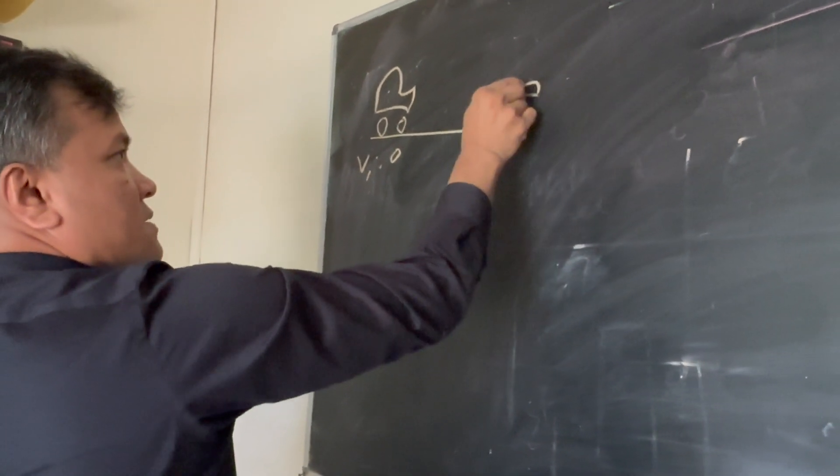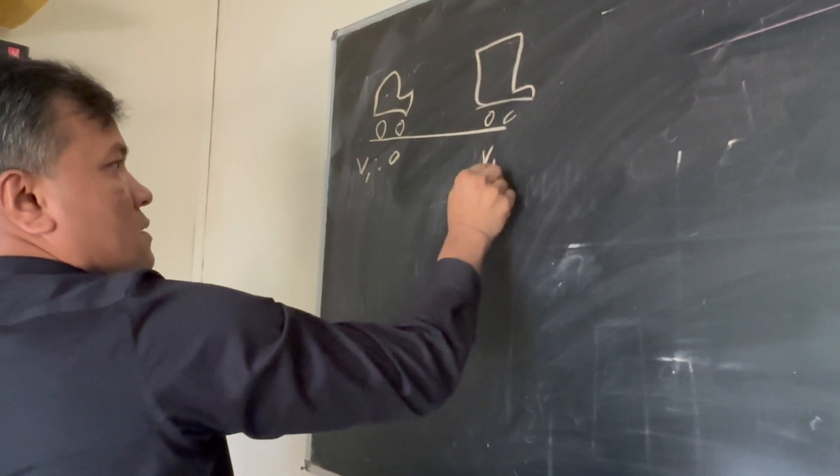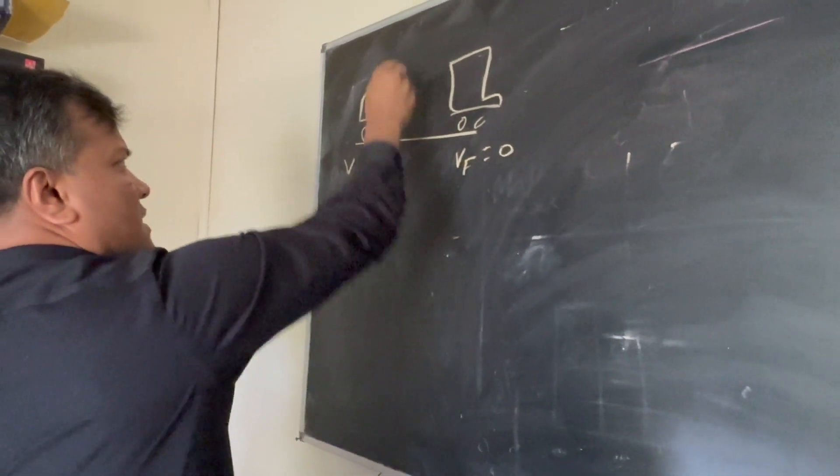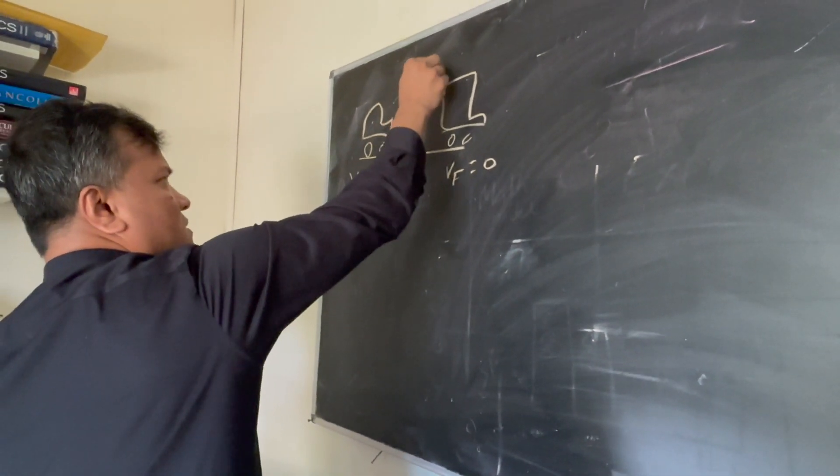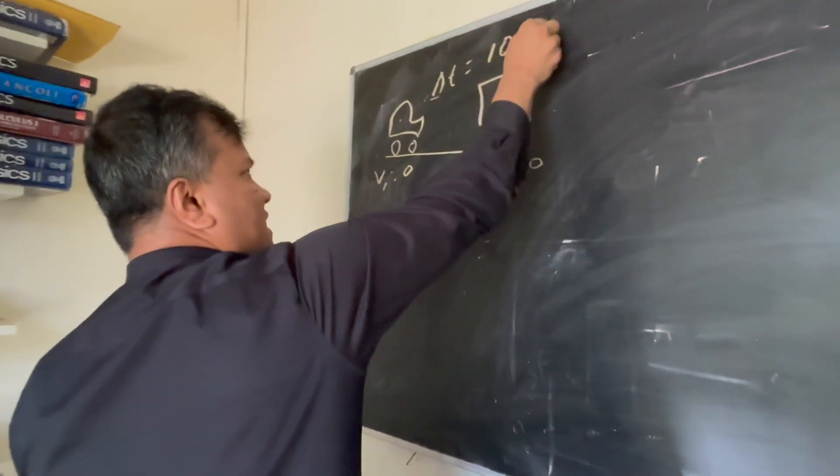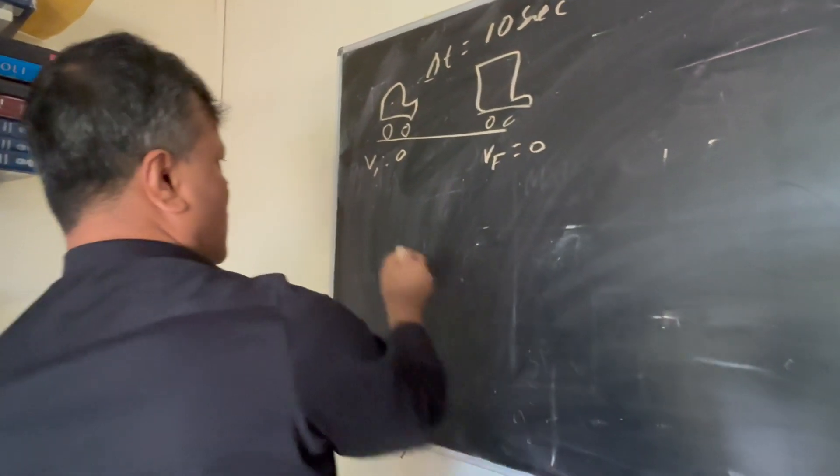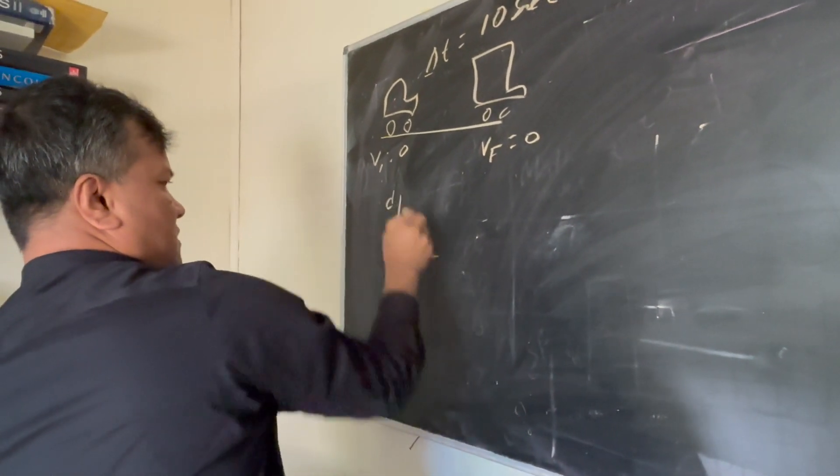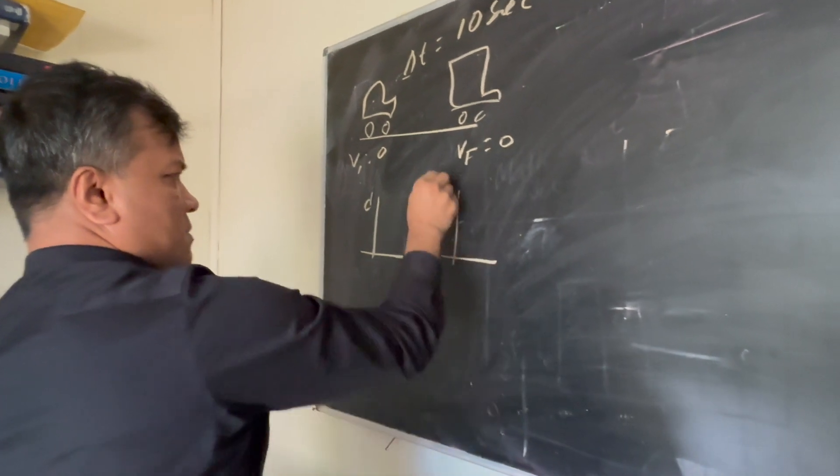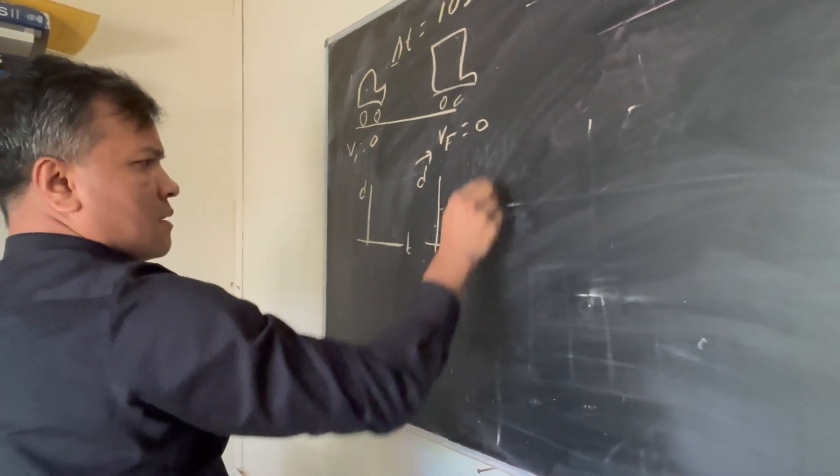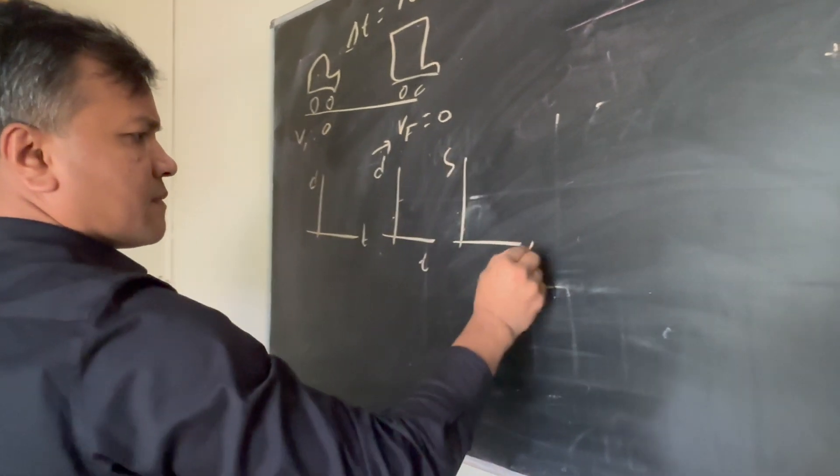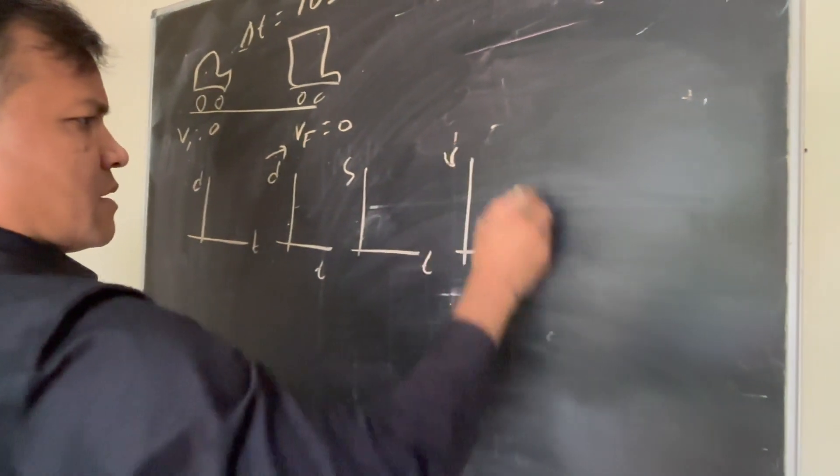The car's final velocity is 0 and the time elapsed is 10 seconds. What I want to do is draw displacement versus time and velocity versus time.